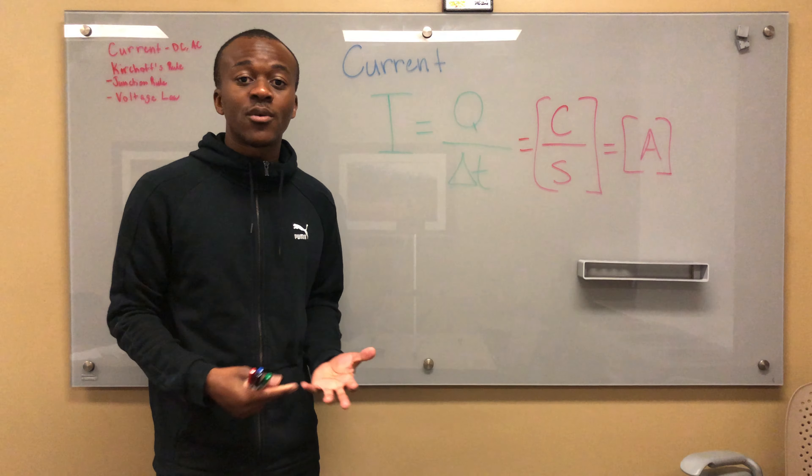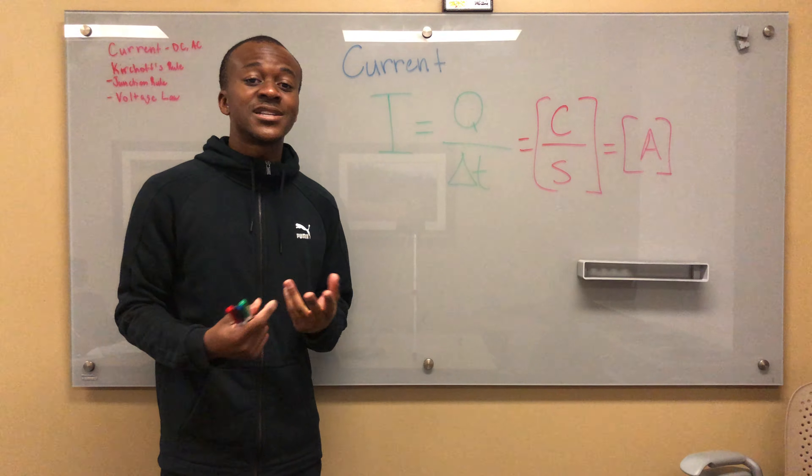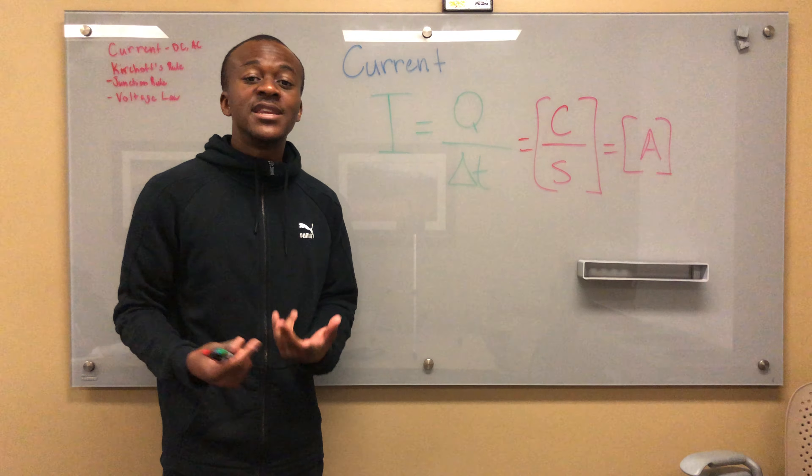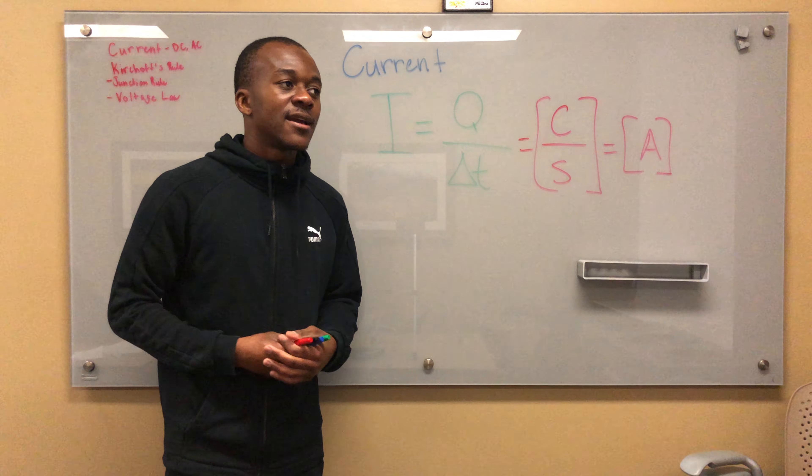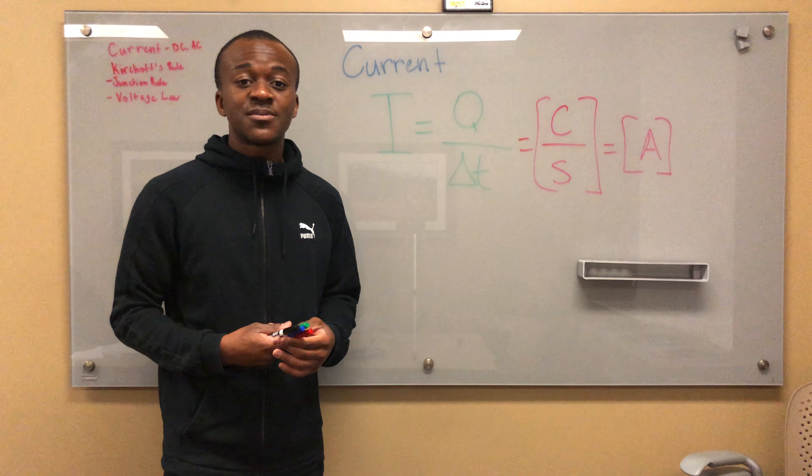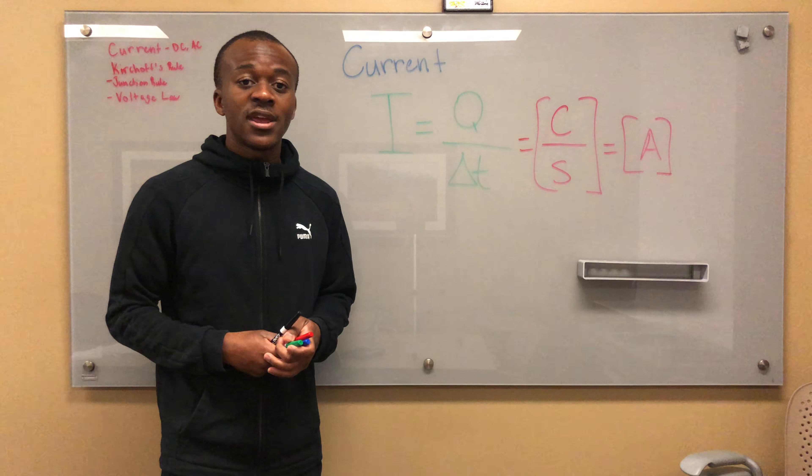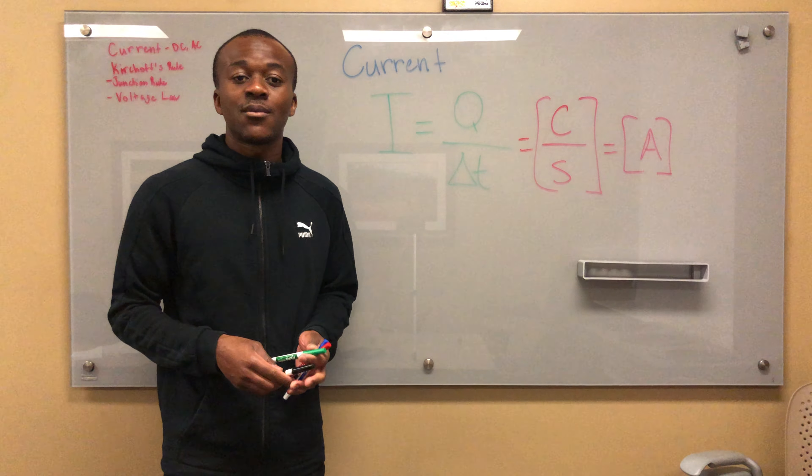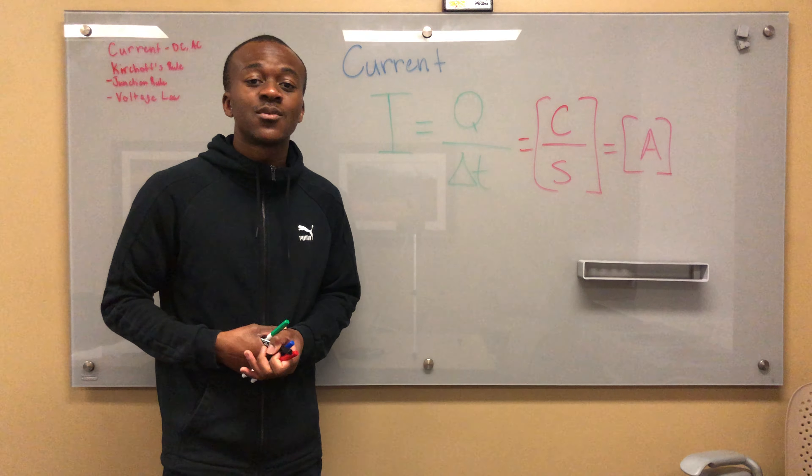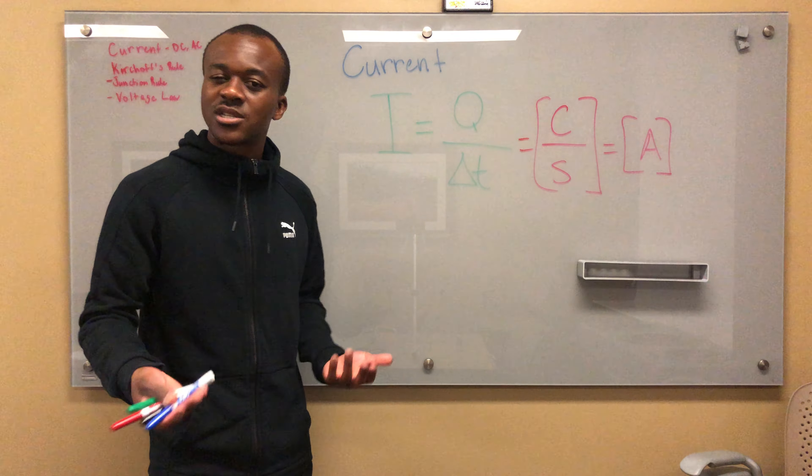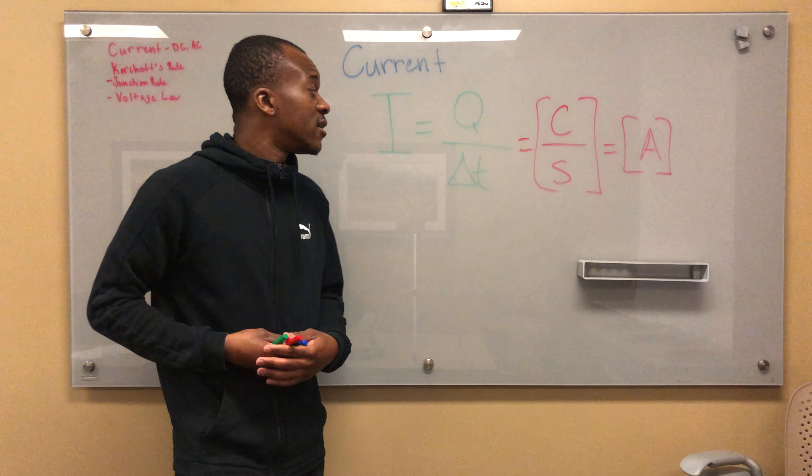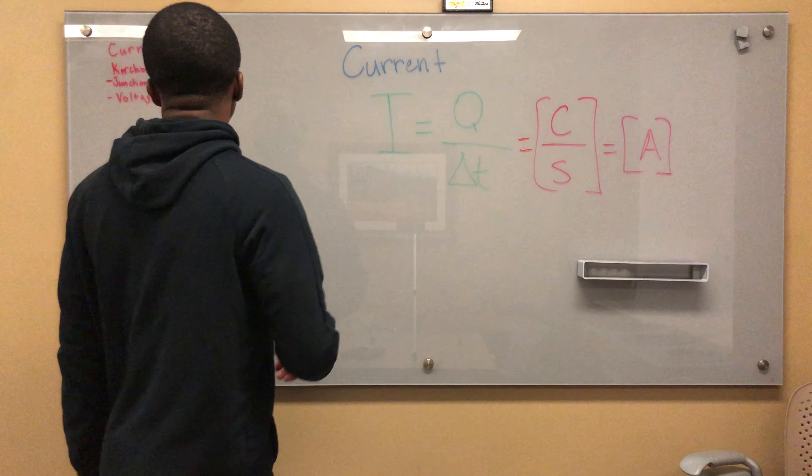But alternating current has flow in different directions at points in time. Electricity is transported as alternating current because it's cheaper to transport it that way, if I'm correct. I think this is why batteries sort of get to be a little bit expensive, but I'm not too sure about that.